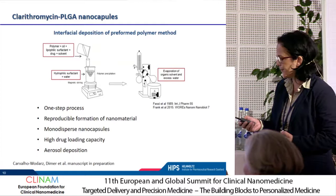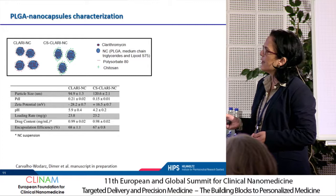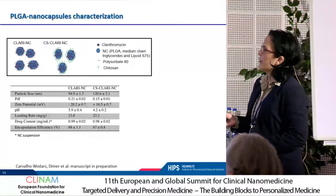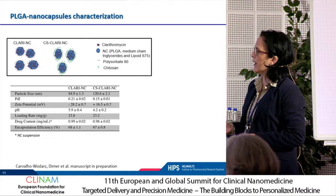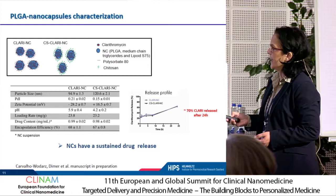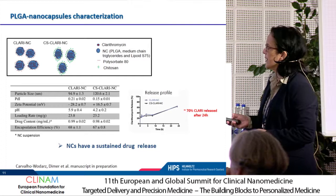How do these particles look? We have developed two kinds of particles: one coated with chitosan — a positive polysaccharide — with the aim to better reach the cell membrane and also the bacteria, and one uncoated. The particles are around 120 nanometers, with 68% drug encapsulation. When we look at the release profile of clarithromycin, it looks quite good because we have a sustained drug release up to 24 hours — 70% of clarithromycin released after 24 hours — and there was no difference between the formulations in terms of release profile.